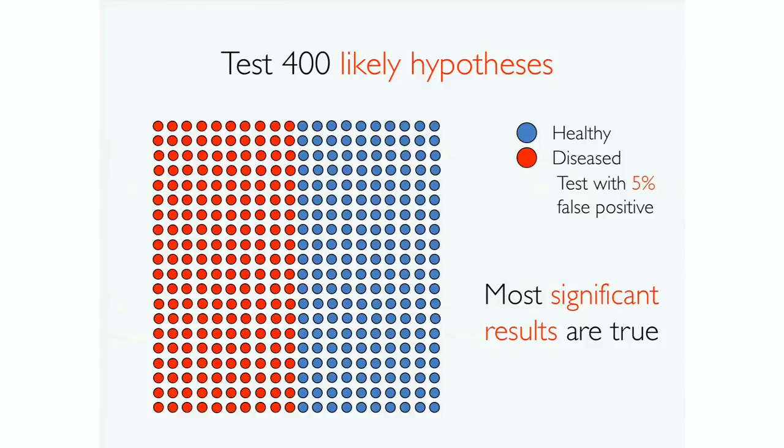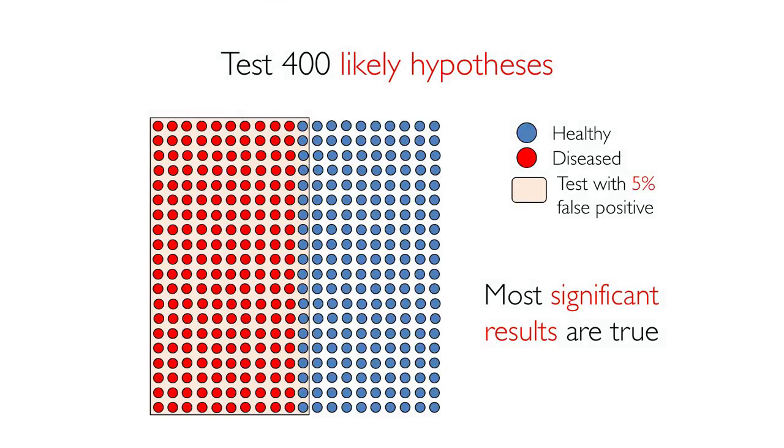And the same thing happens if I test 400 likely hypotheses. So if these hypotheses are 50-50 likely to be true, then same thing. I'm going to pick up a whole bunch of true things. And if I've got a 5% confidence level, then I'll have some that aren't true as well. But fine. Most of them are still true. So that's one bit of reassurance.